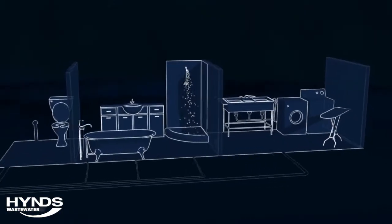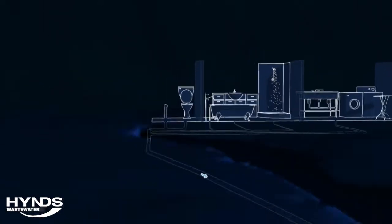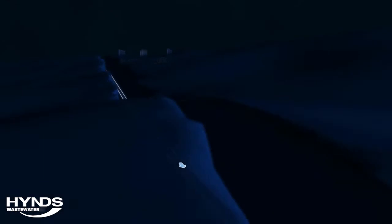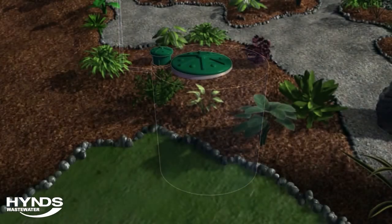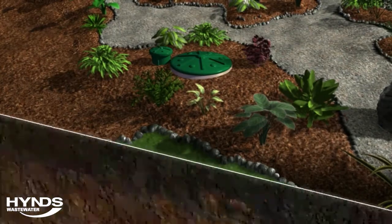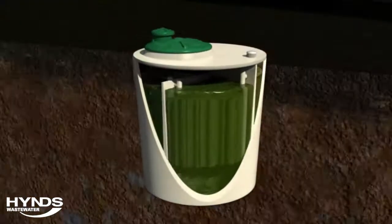Wastewater from the house's bathrooms, toilets, laundry and kitchen is collected and transported into the treatment plant. The Heinz system is manufactured in a high-quality precast concrete tank. This makes the wastewater system both strong and durable.